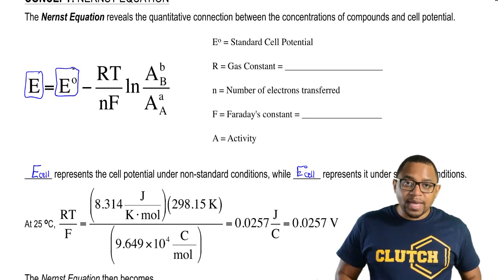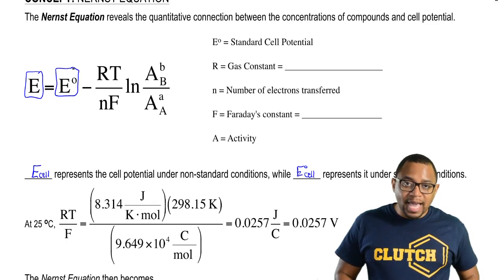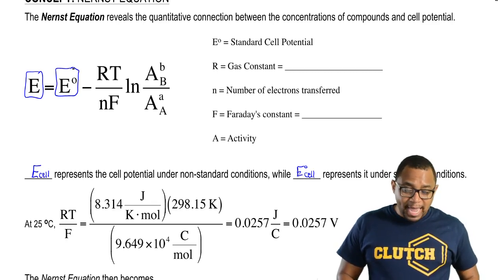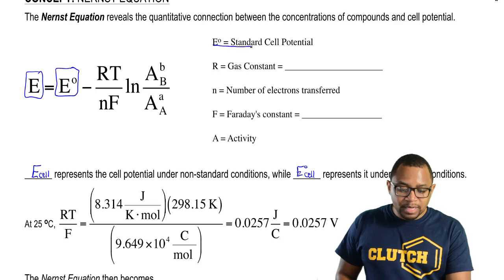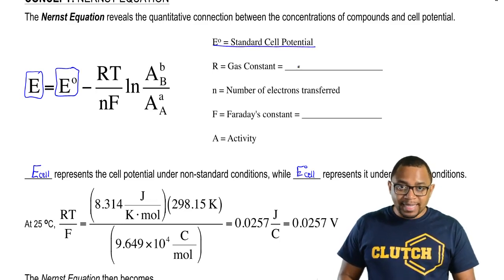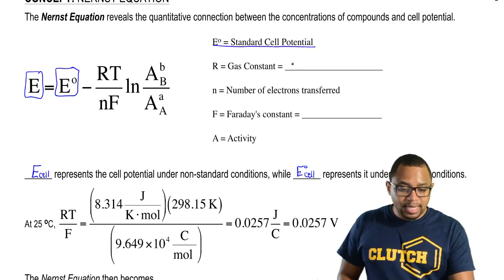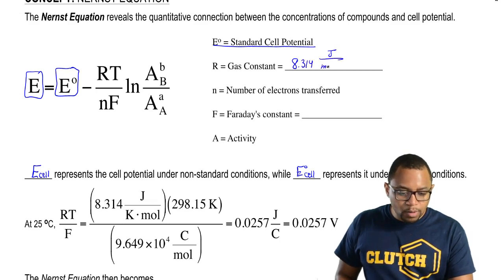The Nernst equation is: cell potential equals E-zero cell minus RT divided by N times F times ln(A/A), where E-zero represents our standard cell potential. R here is our gas constant, equal to 8.314 joules over moles times K.